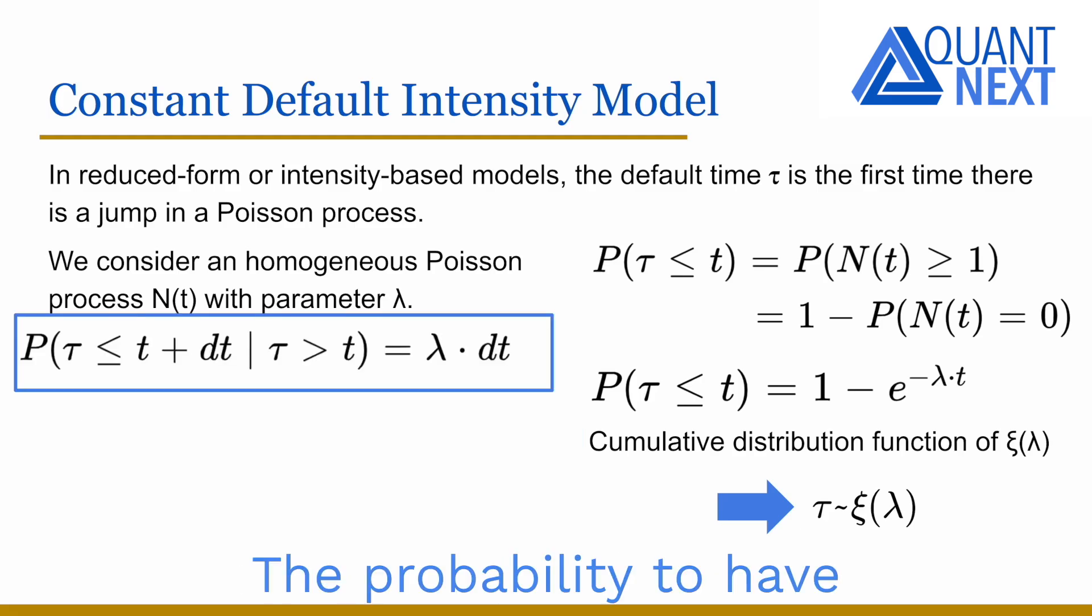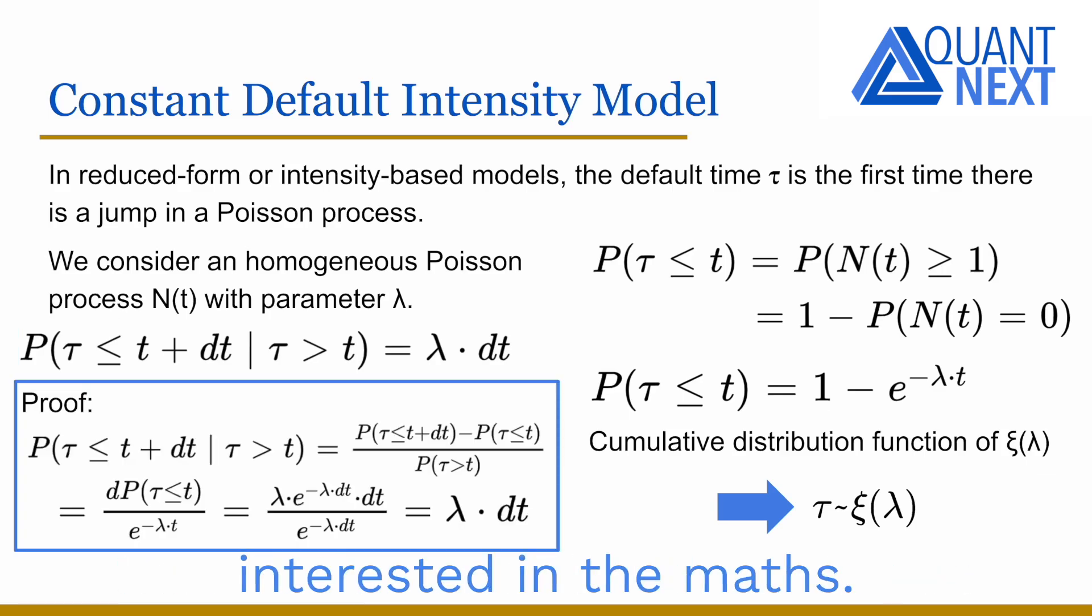The probability to have a default between t and t plus dt, knowing that there was no default before t, is equal to lambda times dt. Here is the proof for those of you interested in the maths.